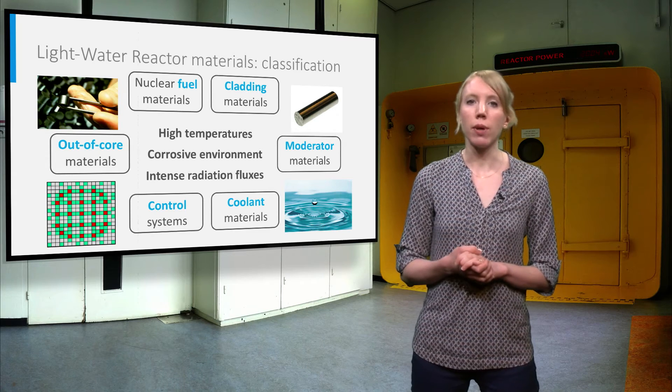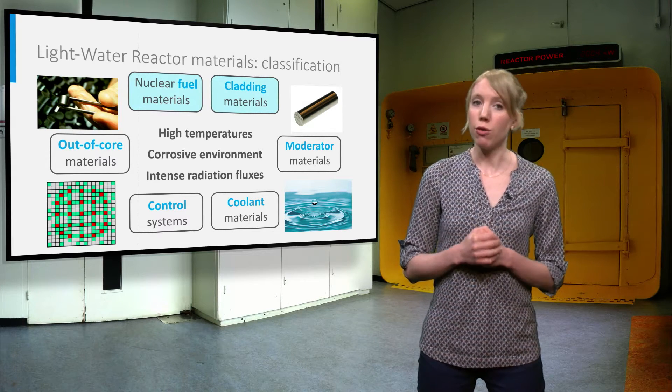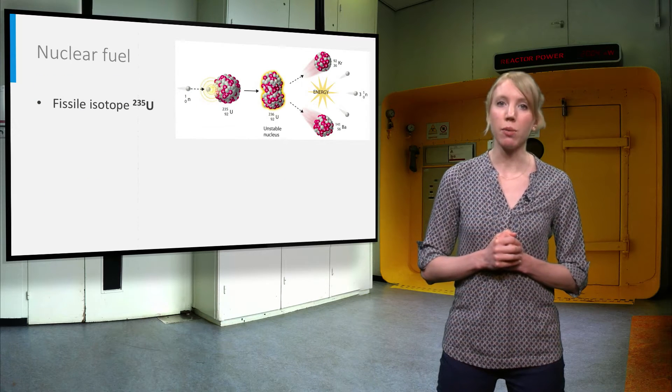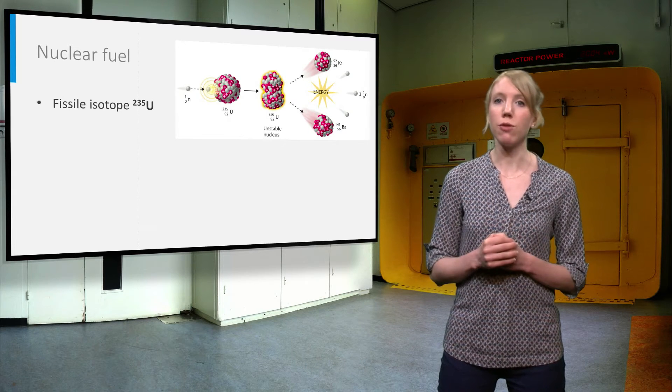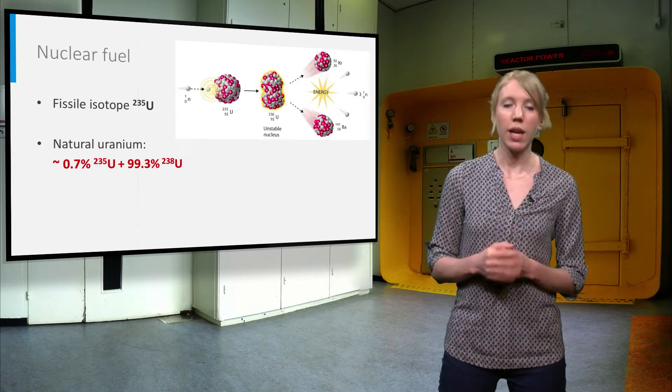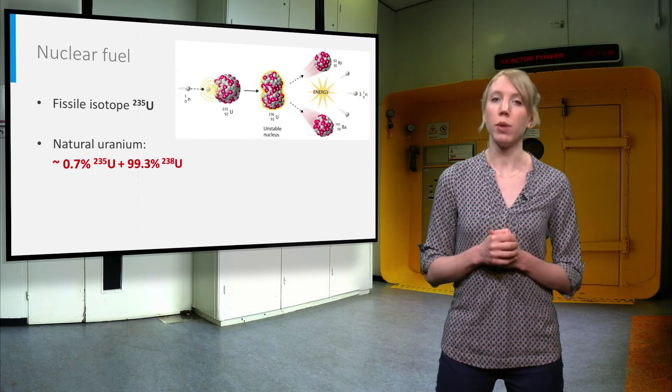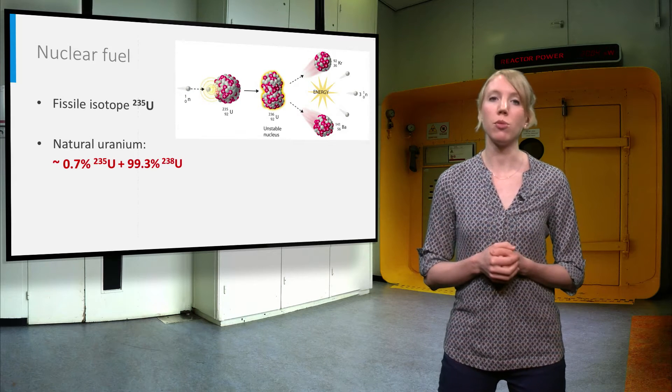In this lecture, we will look at the nuclear fuel and the cladding. Nuclear fuel requires a fissile isotope to sustain the fission chain reaction. Uranium-235 is the most widely used fissile isotope. Natural uranium contains about 0.7% uranium-235 and 99.3% uranium-238.